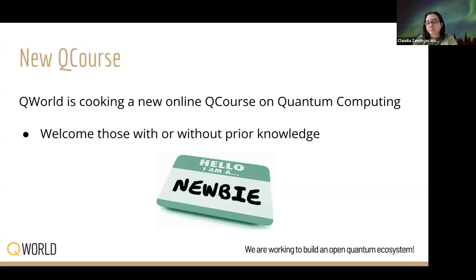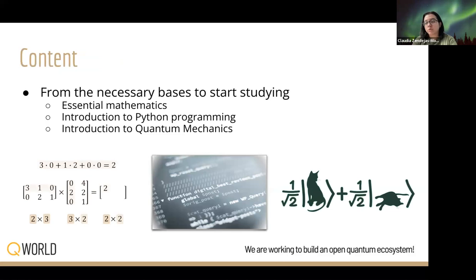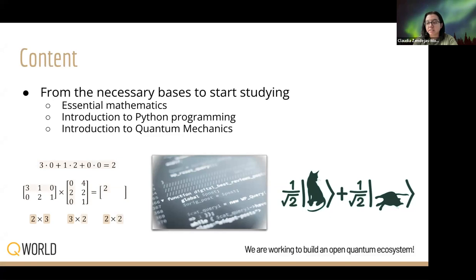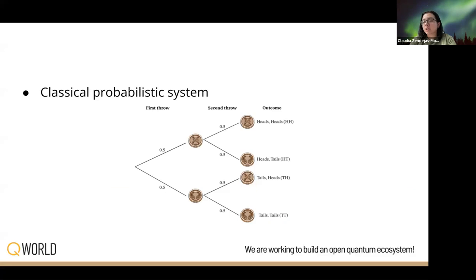This course will begin with the necessary mathematics, which includes linear algebra, and we'll review concepts used in quantum computing. We will learn programming in Python, which includes essential flow structures, definition of functions, methods, and classes — all to be able to write code when programming quantum computing simulations and understand the open-source code that already exists. We will also review basic concepts of quantum mechanics, and we will go through concepts of a classical probabilistic system to give way to the quantum counterpart, starting with simple examples like tossing a coin.